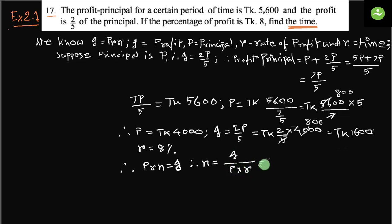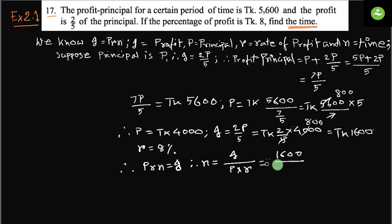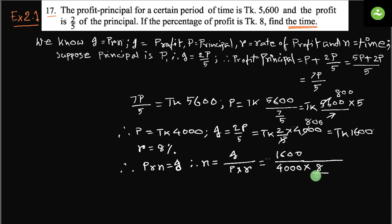Let us put the values. I equals 1600, P equals 4000, and R equals 8 percent, which means 8 by 100.